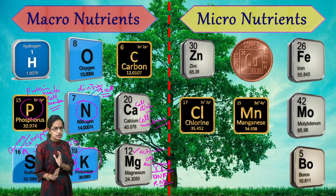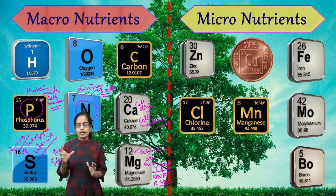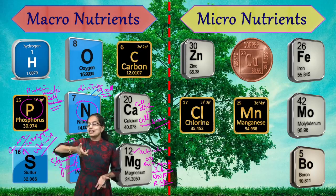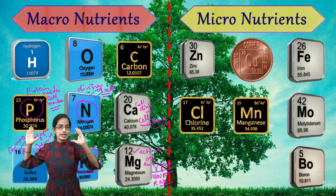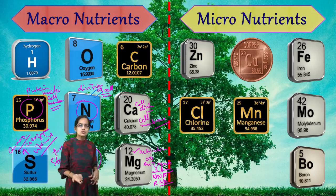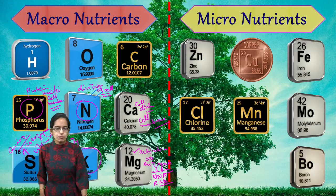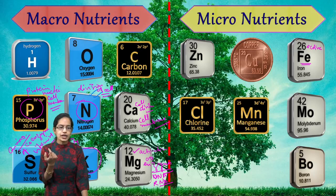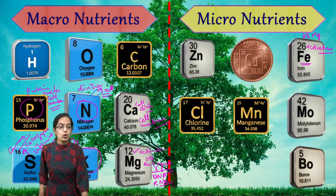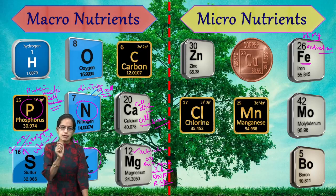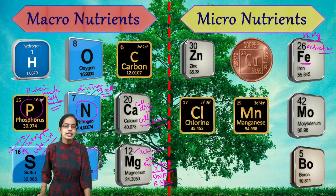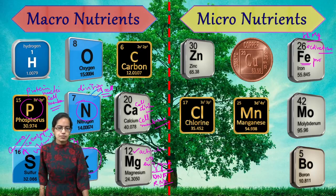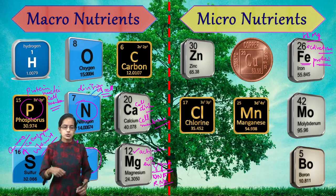Moving from macronutrients, there are trace amounts of nutrients required — these are micronutrients. Macro means nutrients required in larger quantities; micro means nutrients required in smaller quantities. One important micronutrient is iron. Iron helps in the activation of enzymes, along with potassium and magnesium, though iron is required only in trace amounts. Iron also plays an important role in protein building.